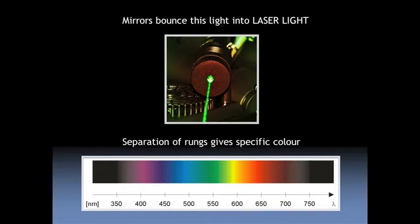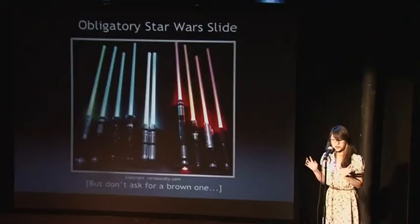The separation between the rungs of the ladder gives you the wavelength of the light emitted, and wavelength is responsible for colour. So at least we can say that George Lucas followed some of the laws of physics when he decided to use crystals — different crystals — to make different colour lightsabers. Just don't ask for a brown one. It's a long story.